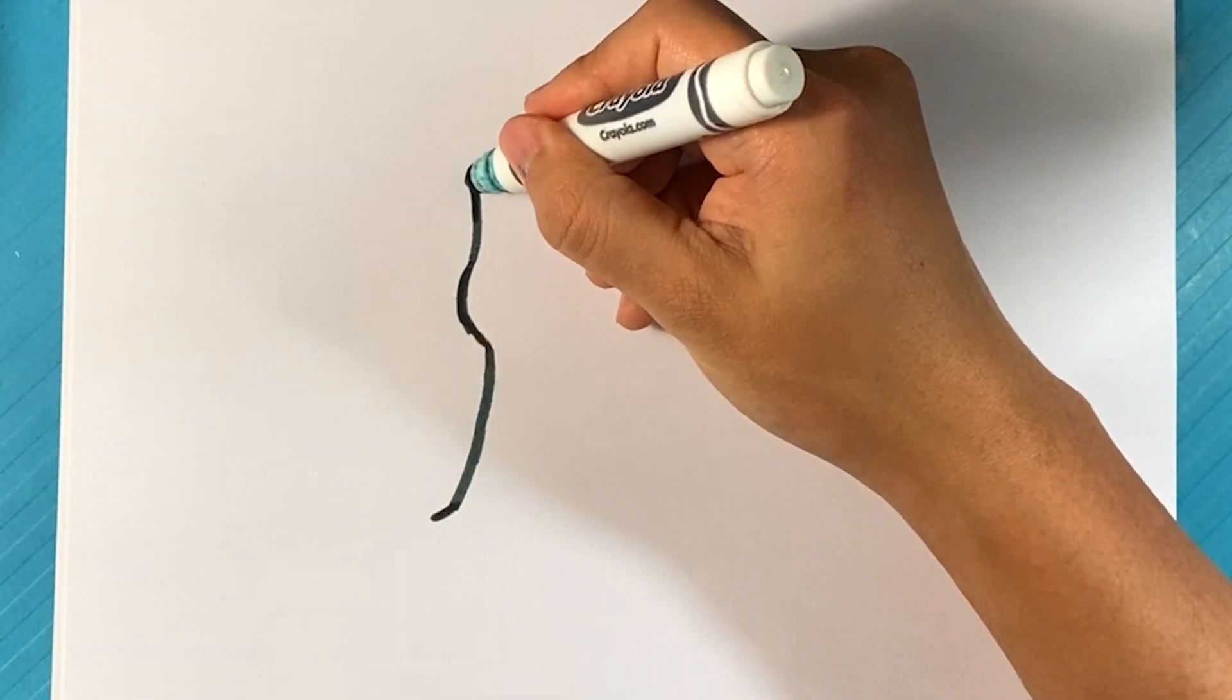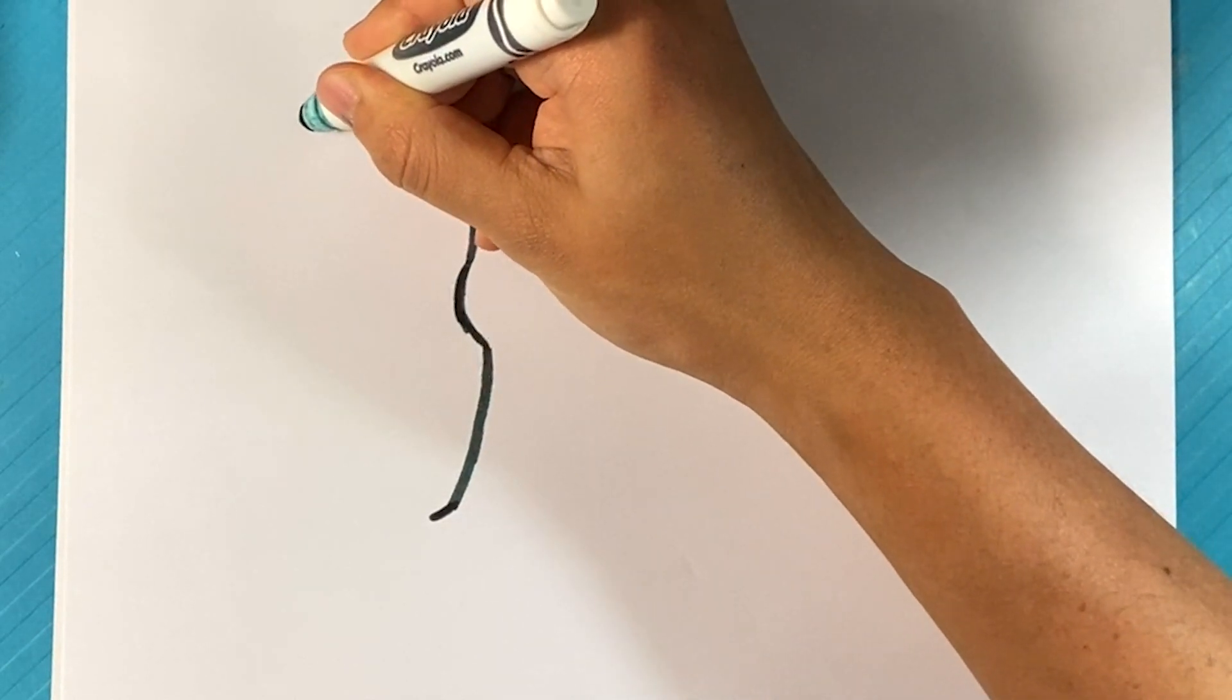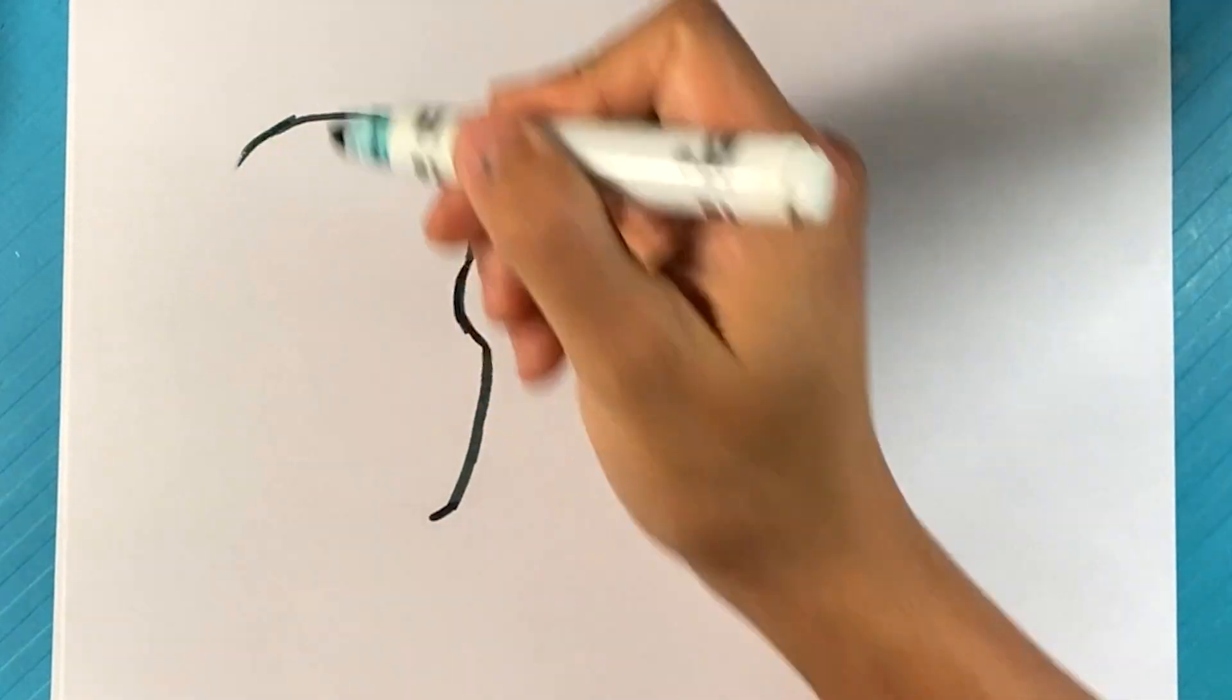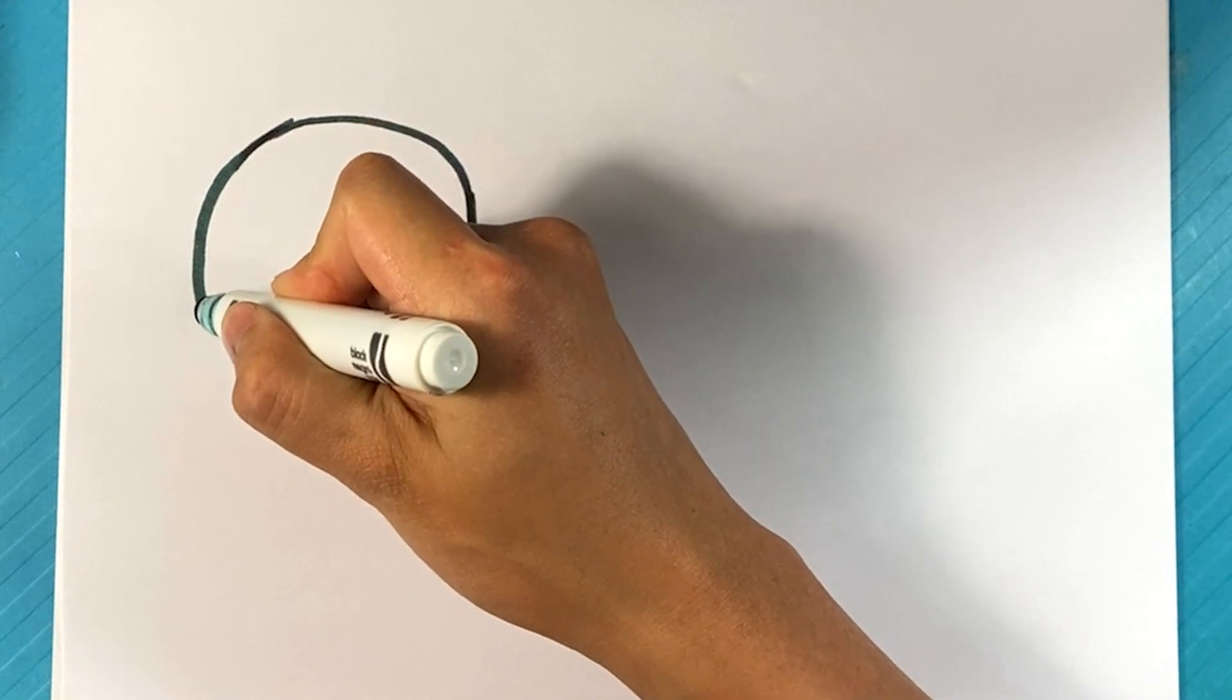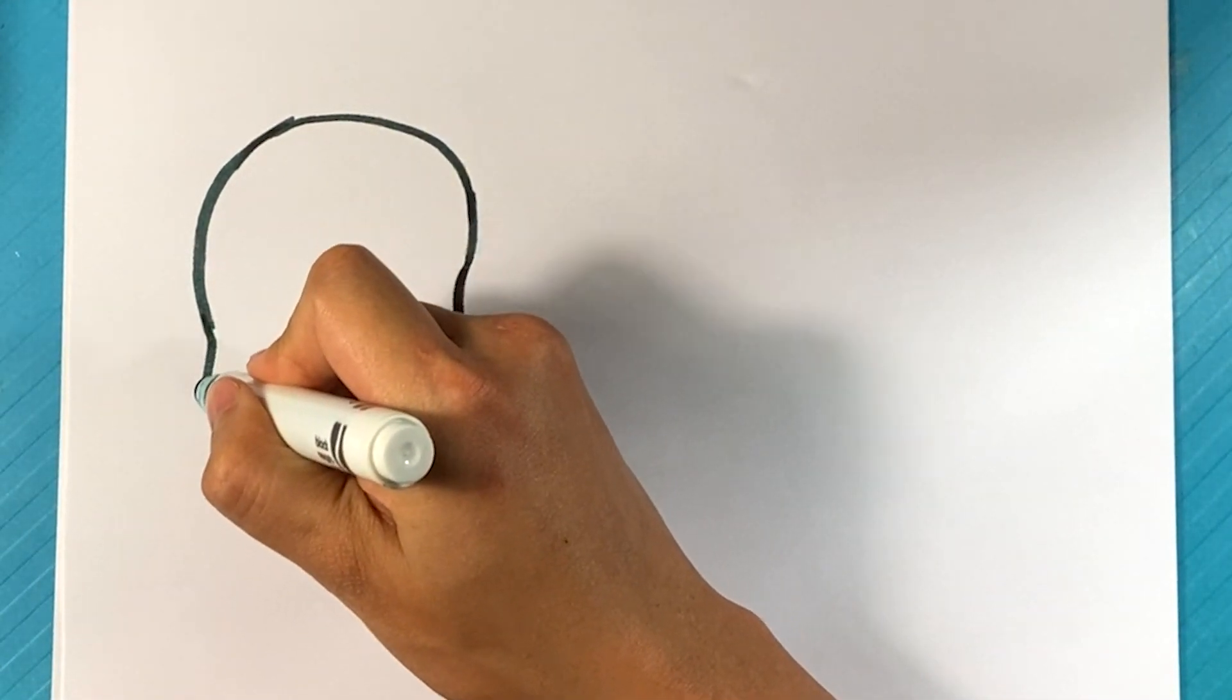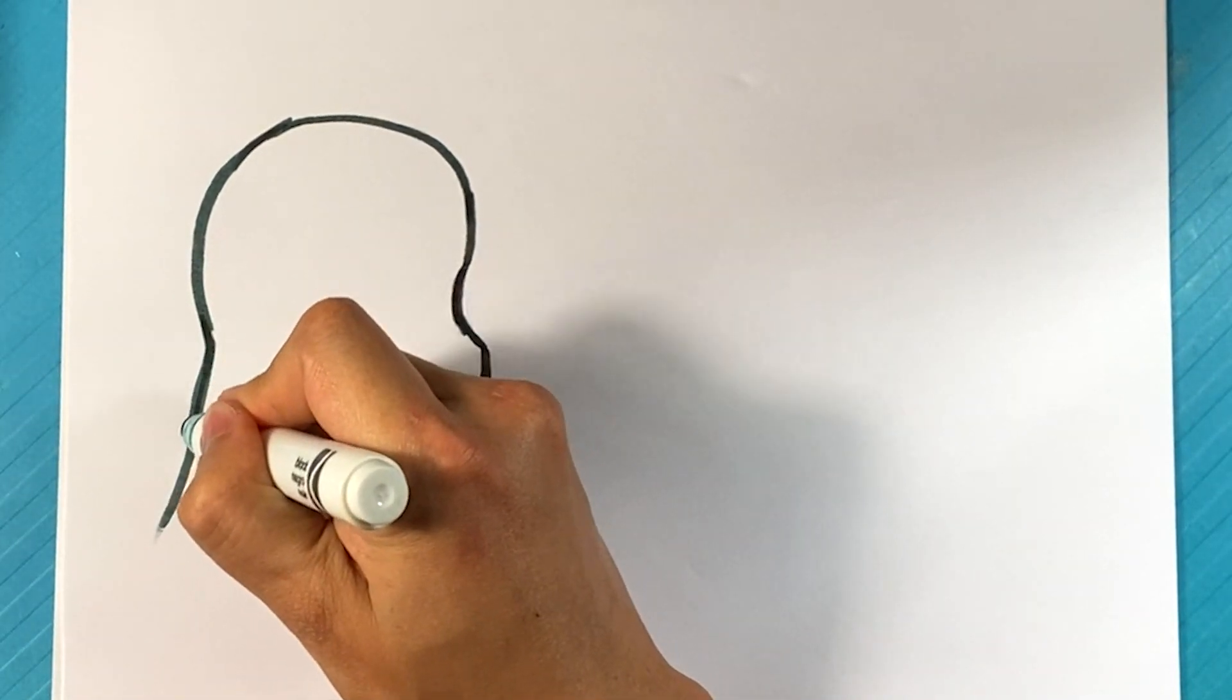As you go past the forehead, the head starts to turn to the top of the head. Keep going on the top of the head, and then it's gonna turn again here for the back of the skull area. And then that's gonna lead down over here on this side into the trapezius, which is just really just the neck muscles in the back.